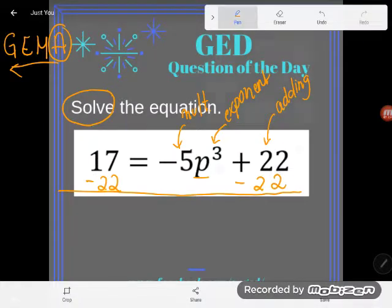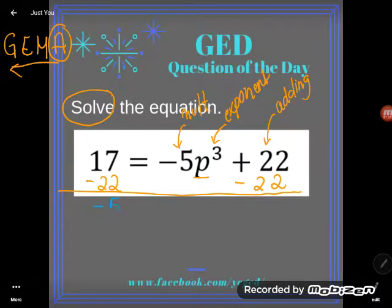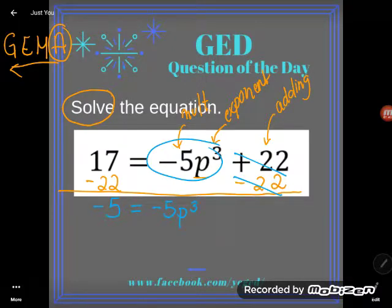Okay, now let's see what my new equation will be here. 17 minus 22 - you can do that in your calculator if you need to - but it should give you negative 5. And on this side, adding 22 and subtracting 22 are opposites, they'll cancel, and so this is what we'll have left: negative 5p cubed, or p to the third power.